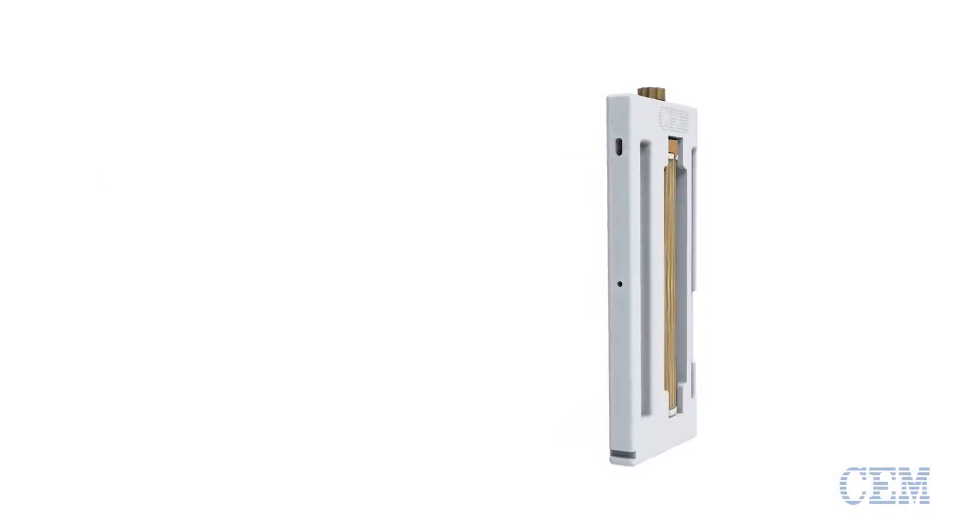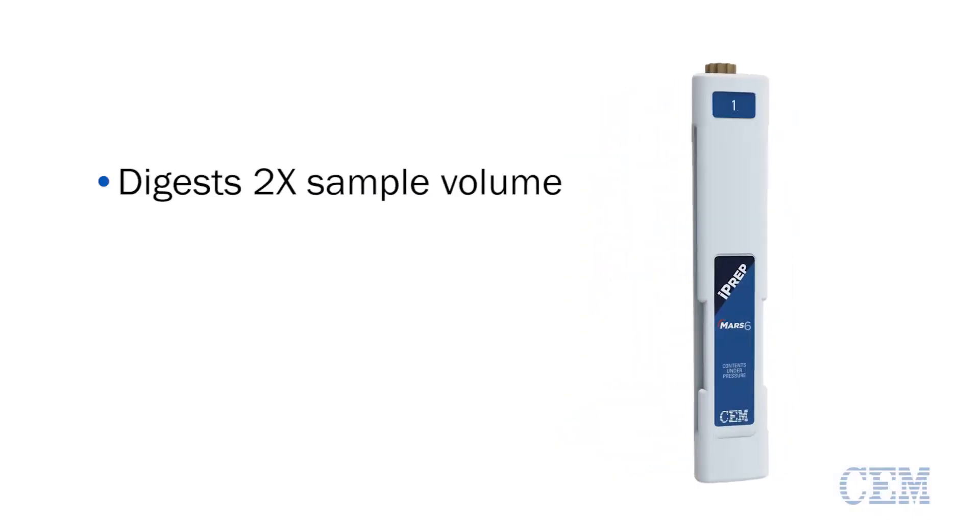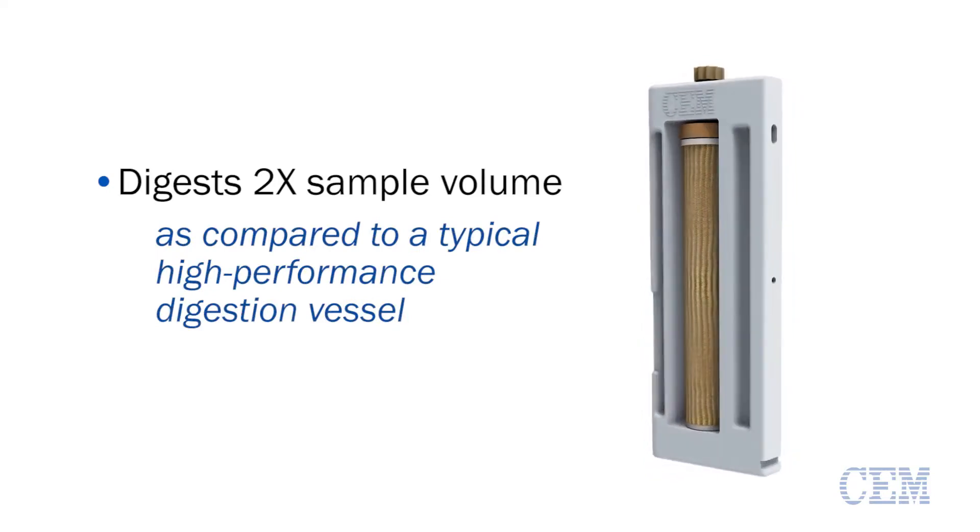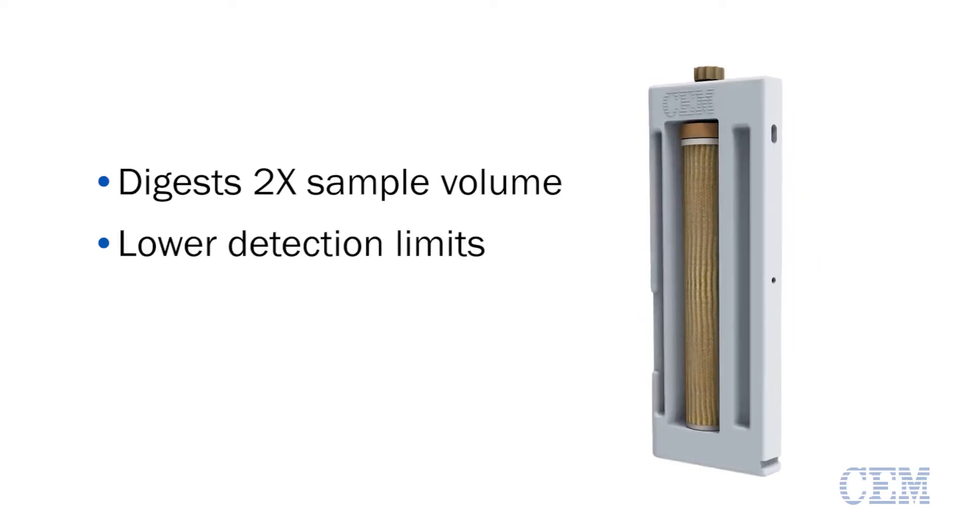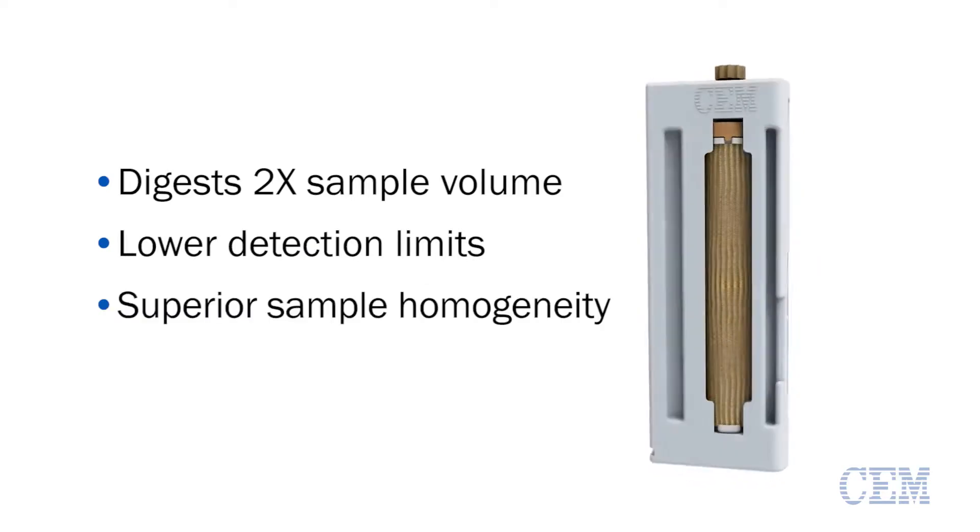I-PREP allows twice as much organic sample to be digested as compared to a typical high performance digestion vessel. The larger sample size allows for both lower detection limits as well as better sample homogeneity.